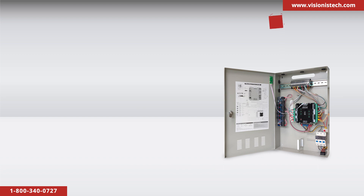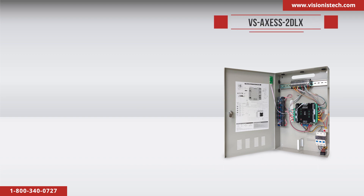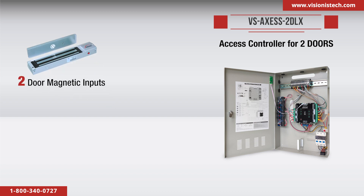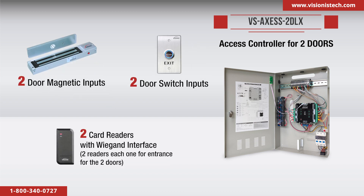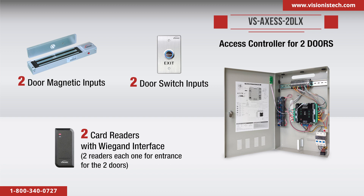The VS Access 2DLX version 2 is an access controller for two doors. This system can connect up to two door magnetic inputs, two door switch inputs, and two card readers with Wiegand interface — two readers, each one for entrance for the two doors, or one for entrance and one for exit for one door.